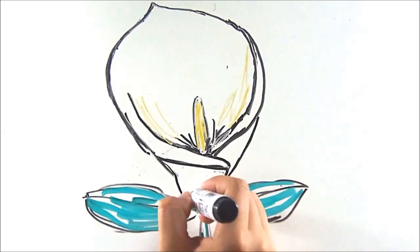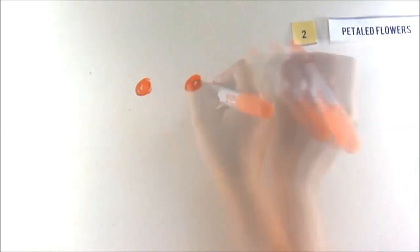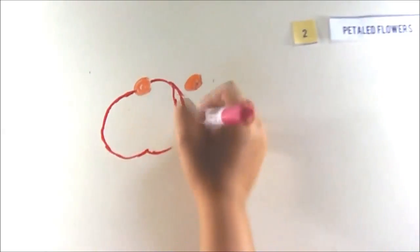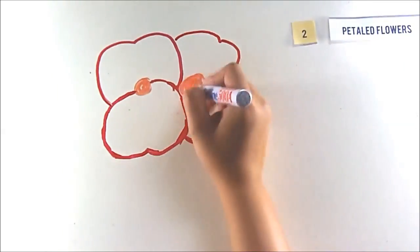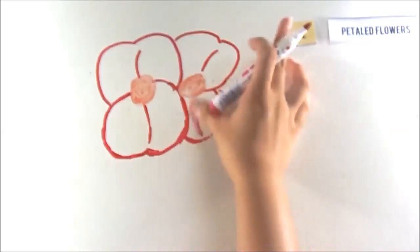The next number is number two. Yes, there are two petal flowers. They are uncommon, but they do exist, like the euphorbia.